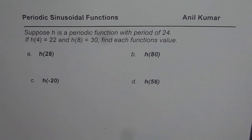The question here is, suppose H is a periodic function with period of 24. If H(4) equals 22 and H(8) equals 30,